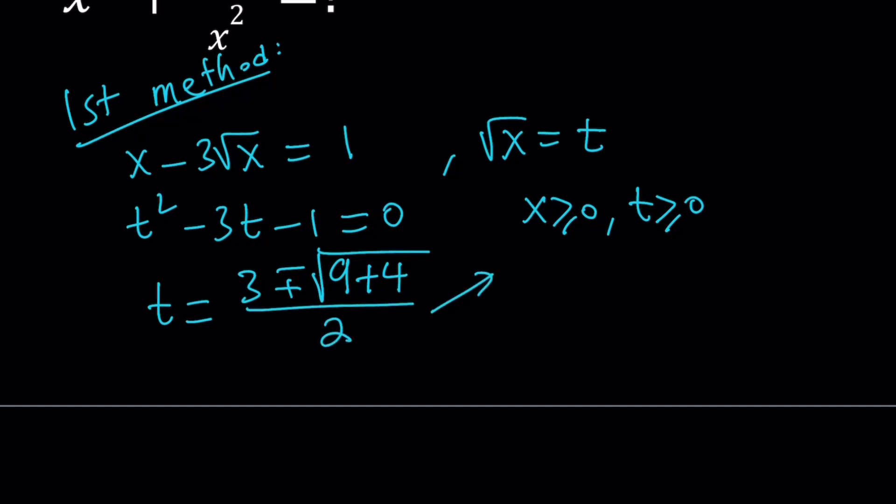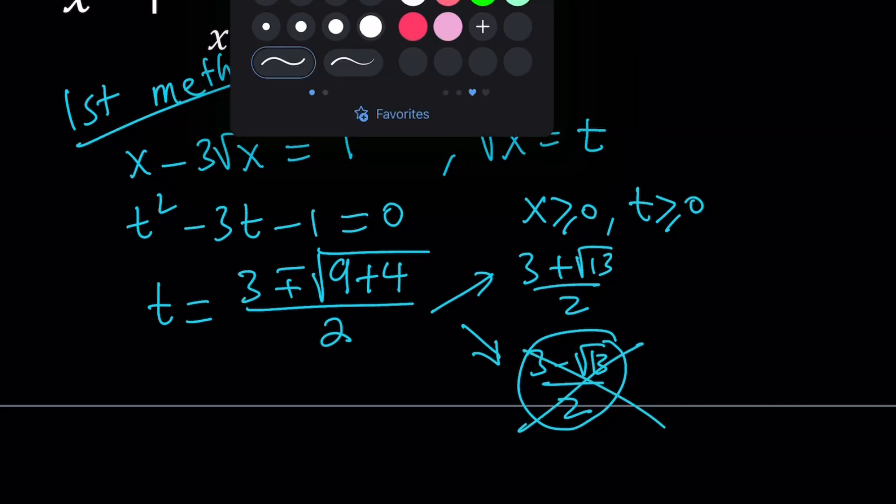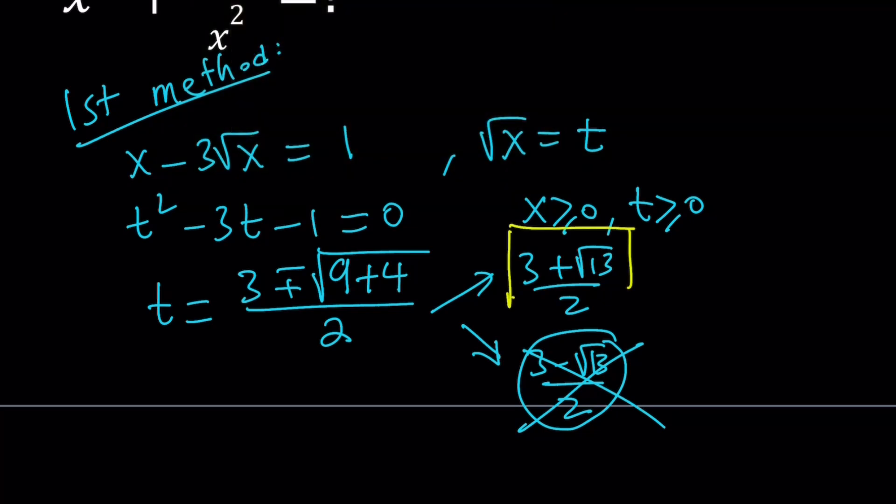So t can take two values, either 3 plus root 13 over 2, or 3 minus root 13 over 2. But unfortunately, 3 is less than square root of 13, because 3 is square root of 9. So this is a negative quantity, and remember, we want t to be greater than or equal to 0. Therefore, we're going to reject the second solution. So we're only going to go with one solution, which is good. That is the only t value that works. And guess what we're going to do? We're going to find the x value from here.